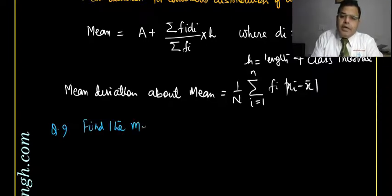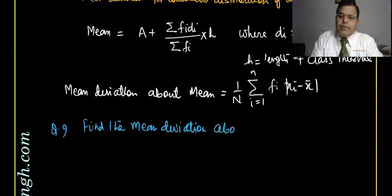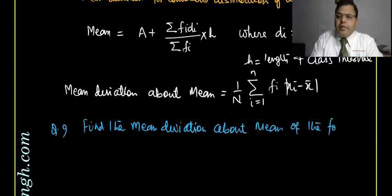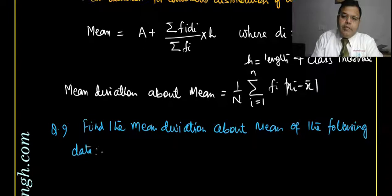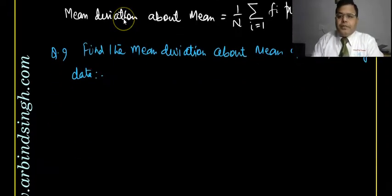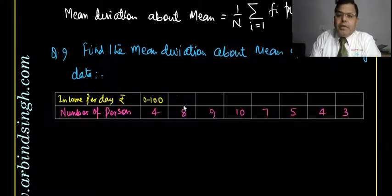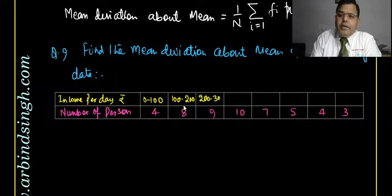The question gives income per day in class intervals: 100–200, 200–300, 300–400, 400–500, 500–600, and 600–700, and 700–800. These are the continuous class intervals for the distribution of income data.